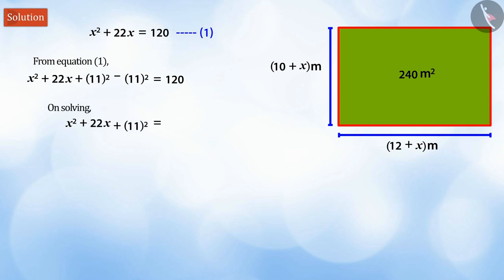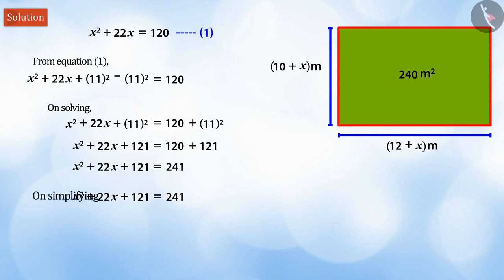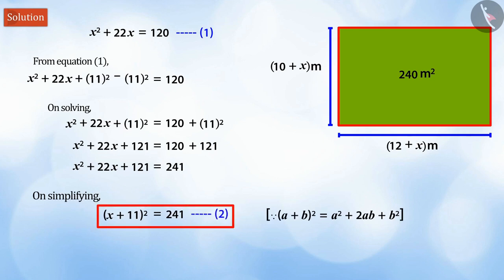When we solve this equation, we get x² + 22x + 121 = 241, which can be represented in the given manner in equation 2.